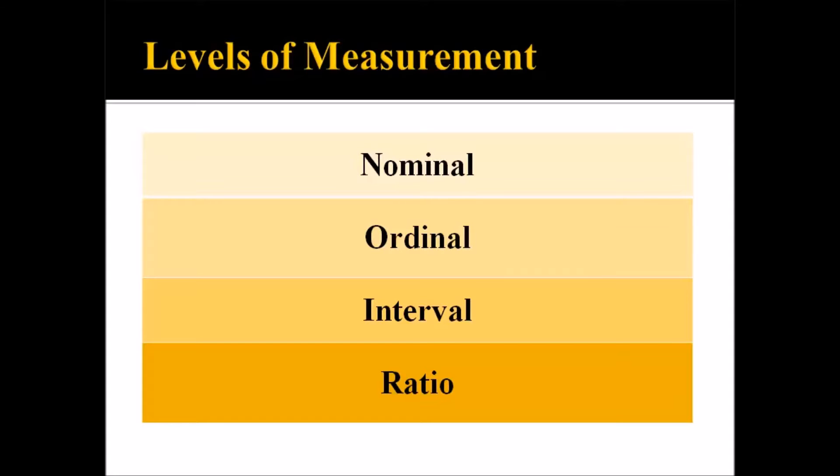As you move from the lowest level, which is nominal, to the next level up, ordinal, ordinal contains all the properties of nominal plus something additional. Similarly, interval has all the properties of ordinal plus something additional, and ratio has all the properties of interval plus something additional. So the ratio level of measurement is the most useful, but we can't always measure at that level. We have to know what types of statistics we can use with each level of measurement.